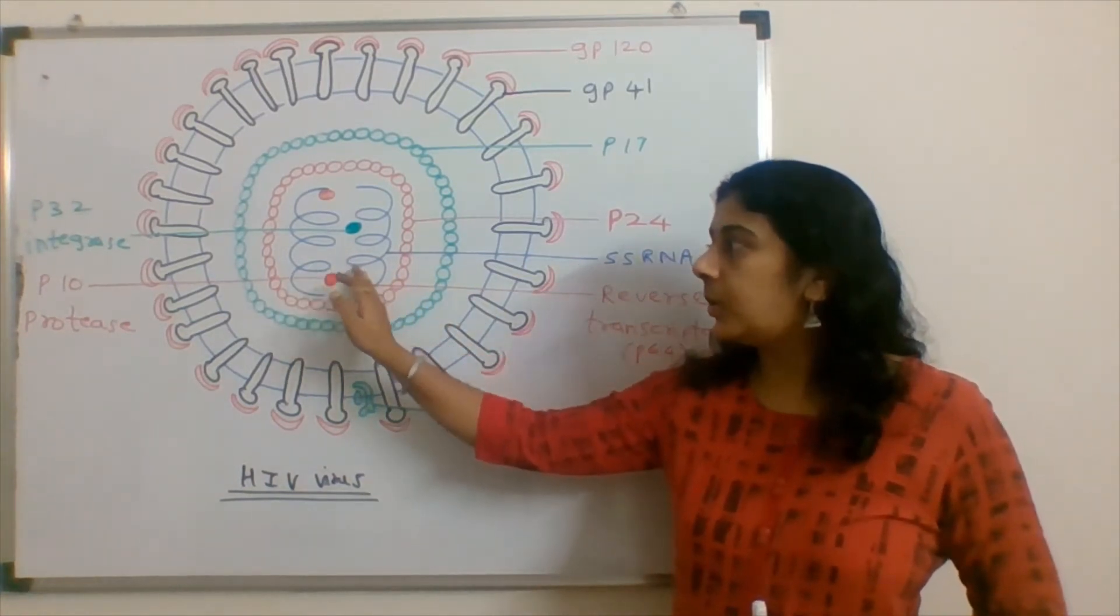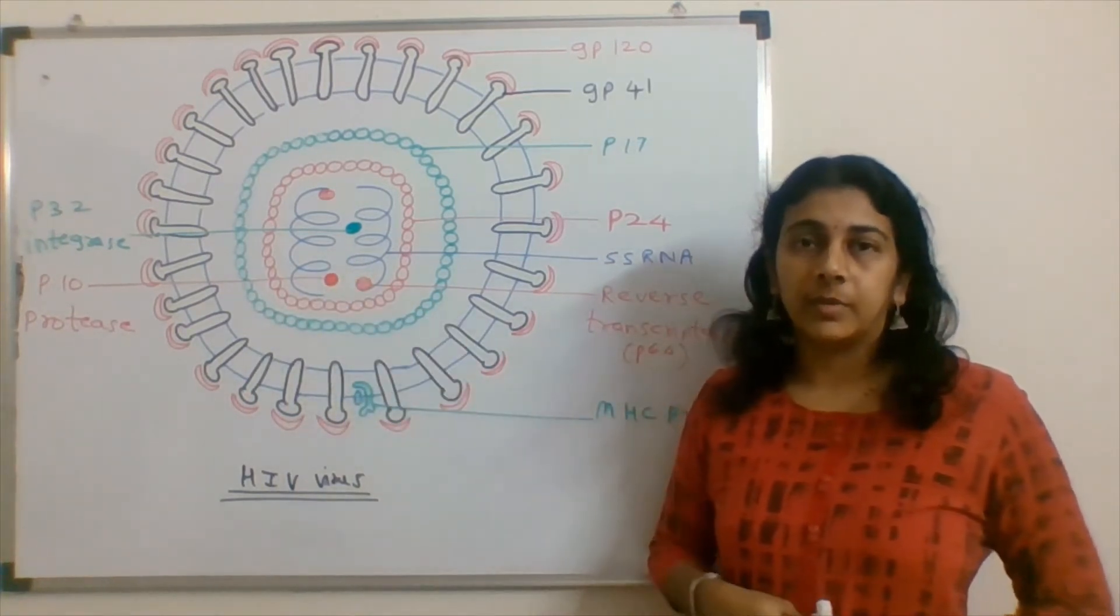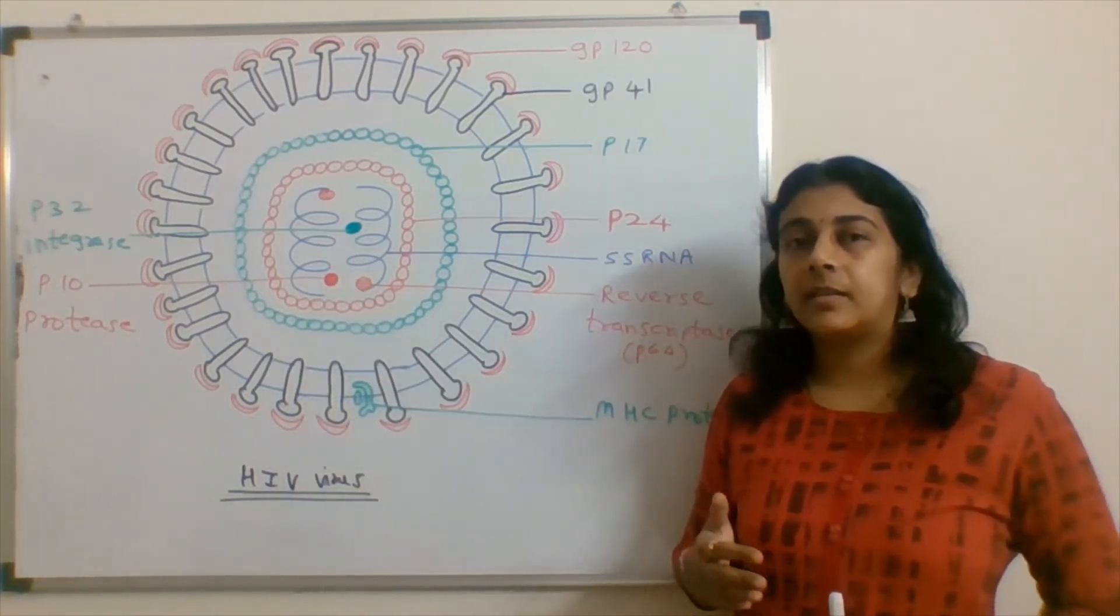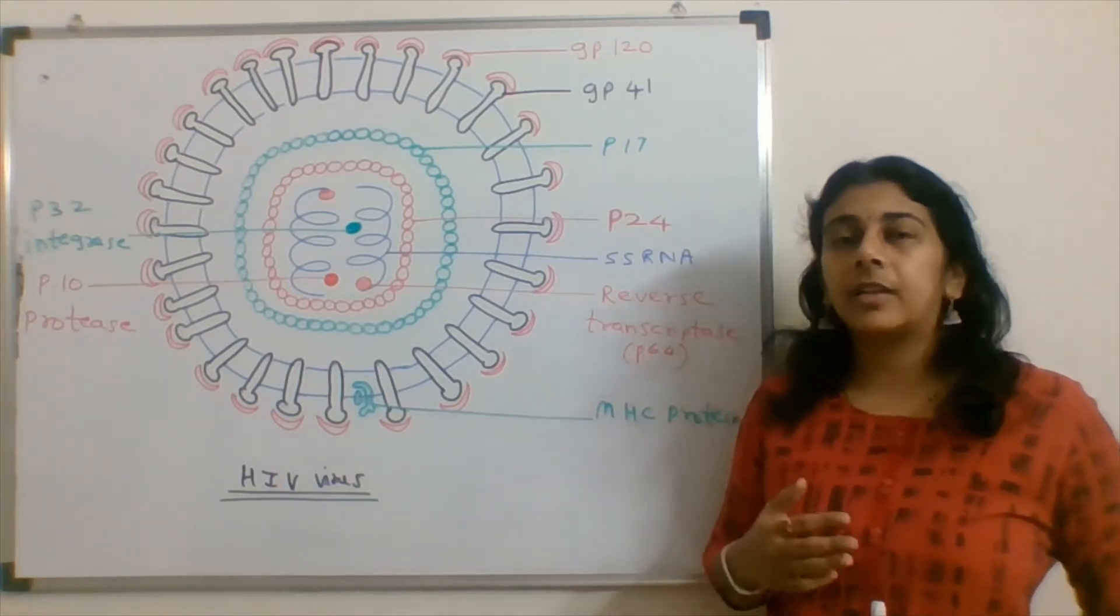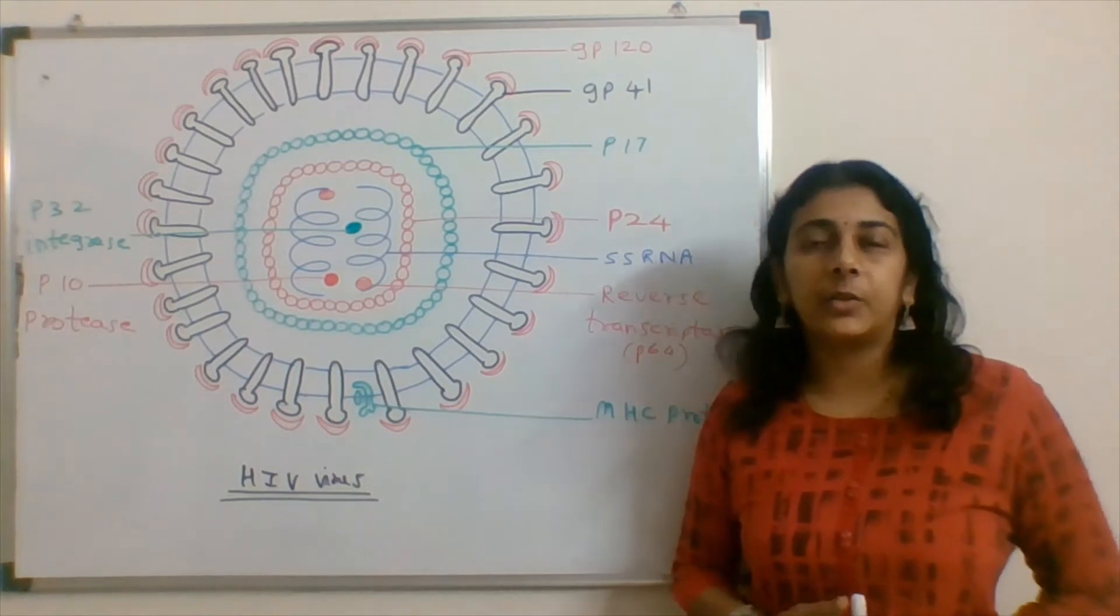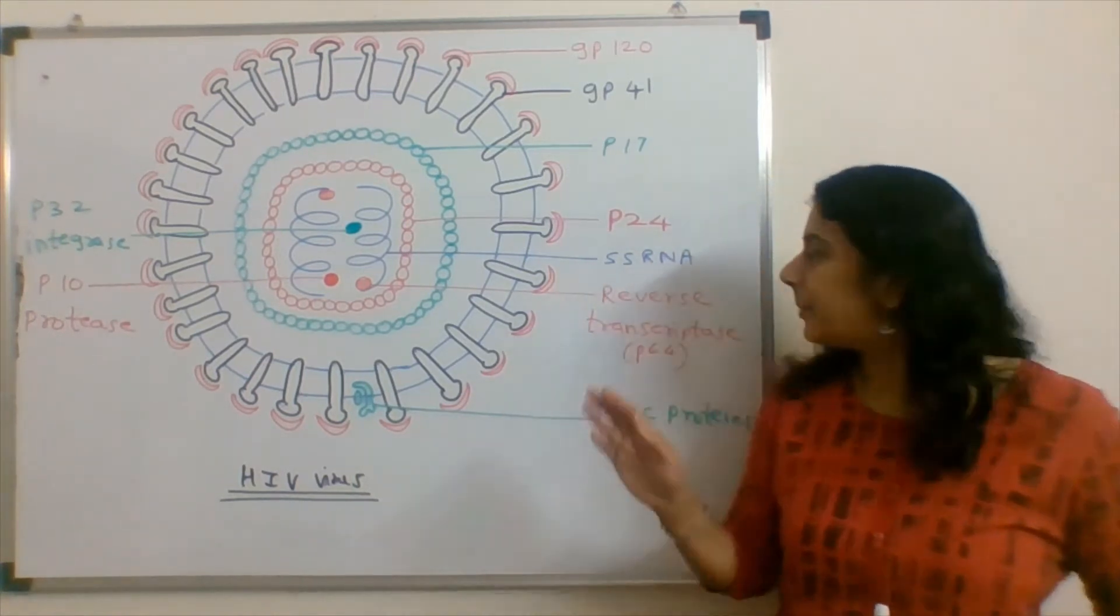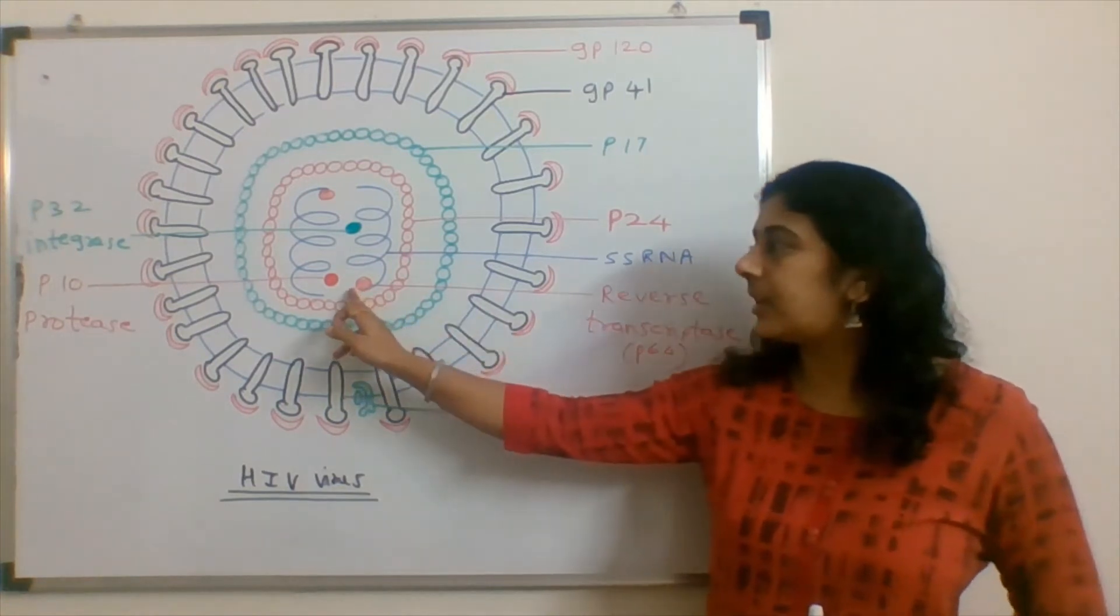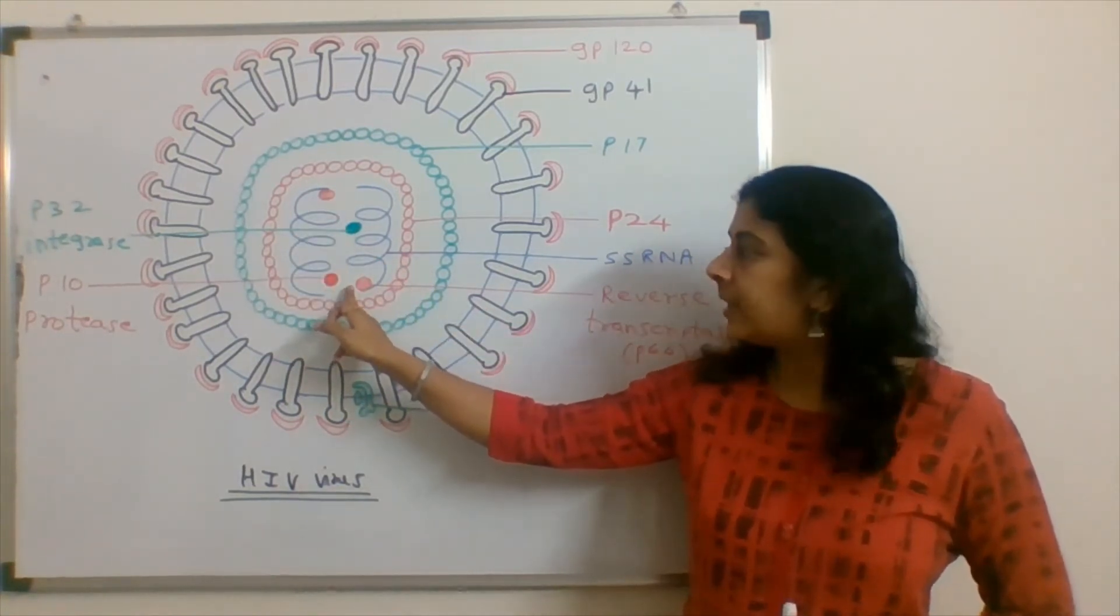There are two copies of single stranded RNA in the HIV genome, so this is an RNA virus. And for its life cycle to carry out, it will need reverse transcriptase. Two copies we see here.